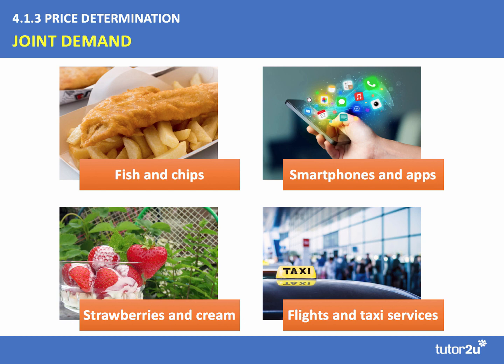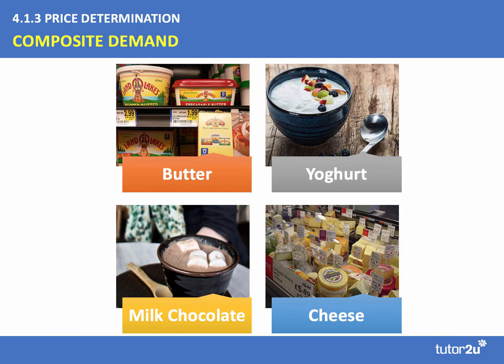Here's our fourth and final demand in this video: composite demand. Composite demand is best defined as where goods have more than one use, and typically an increase in the demand for one product leads to a fall in the supply of another. So if we think about milk — milk can be used for cheese, for yoghurt, for cream, for butter, and even for other products including fertiliser and in making chocolate. So milk has a composite demand.